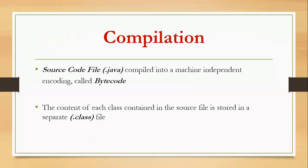During compilation, your source code — that is the Java file — is compiled and goes through the compiler. After compilation, it is compiled into a machine-independent encoding called bytecode. The content of each class in your source file is going to be stored into a separate file after compilation, and that file will have an extension of .class.